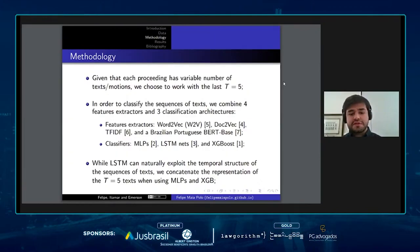While LSTM can naturally exploit the temporal structure of the sequence of texts, when using the multilayer perceptrons and the XGBoost classifier, we had to concatenate the last five text representations to have a unique vector of features for each sequence of texts.